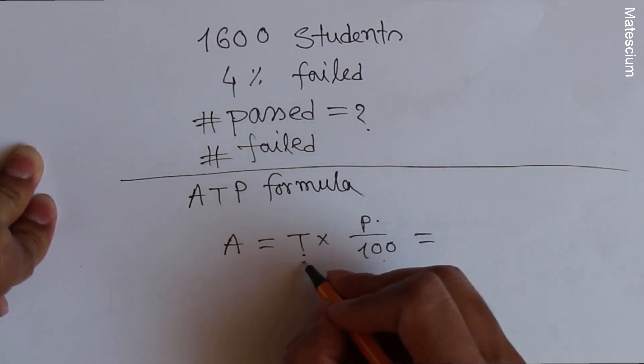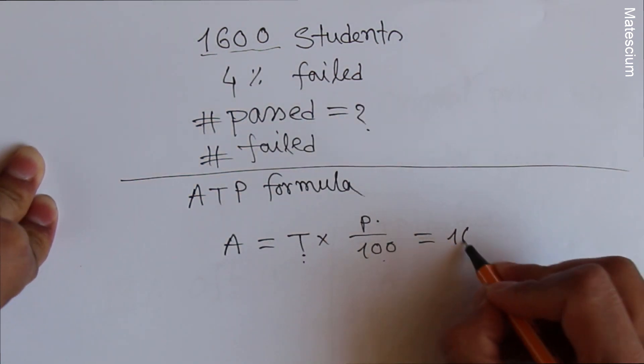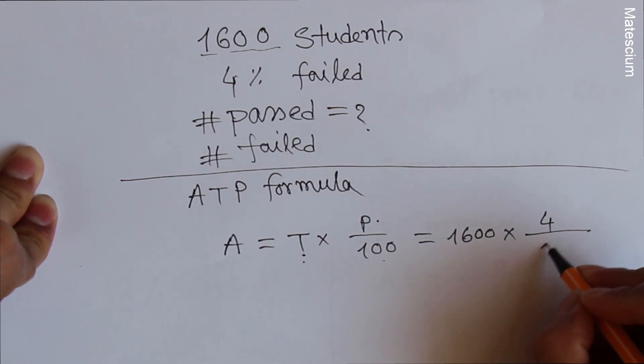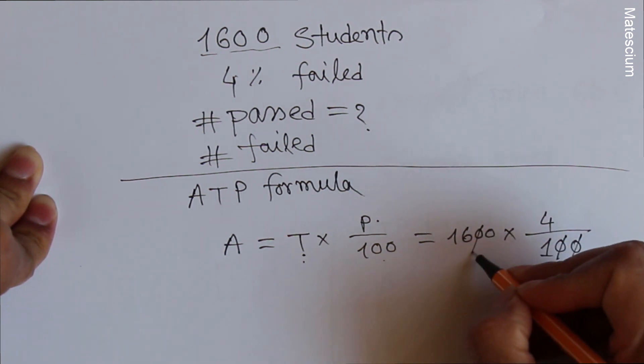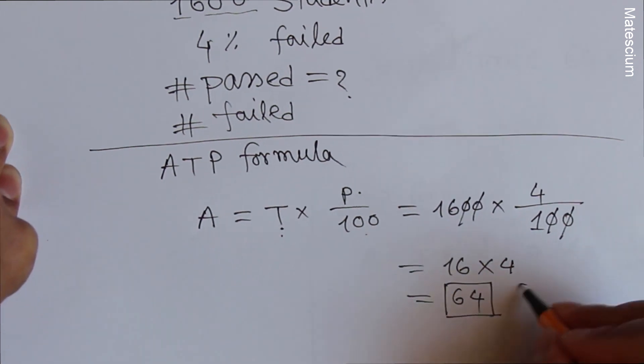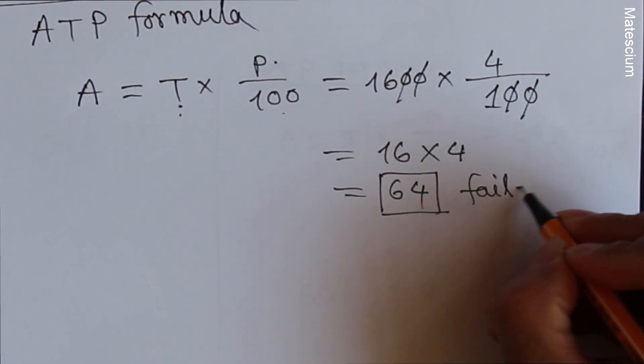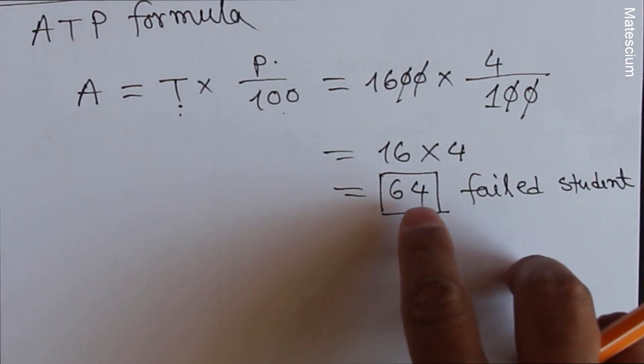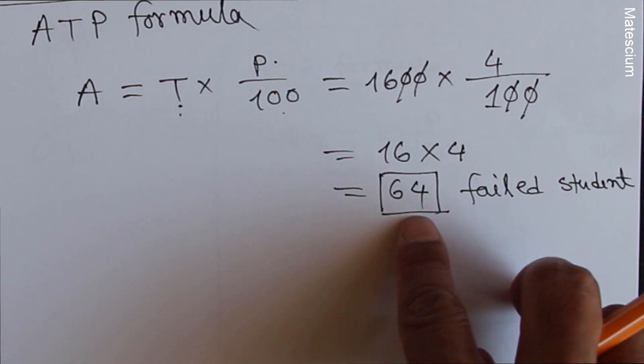That means T is in this case total students, 1600 times P is 4% over 100. I can cancel this zero, that zero, this zero and this zero and that zero. Remaining is 16 times 4, which equals 64. This 64 students are failed. That means total number of students are failed and that is 64.